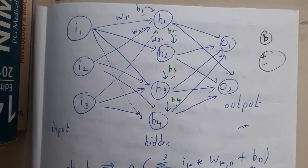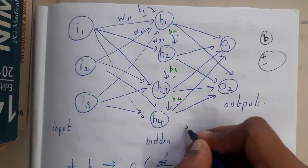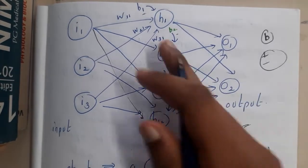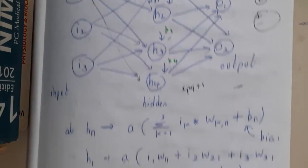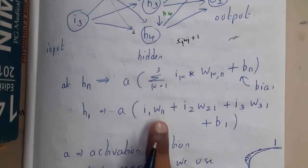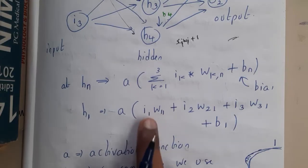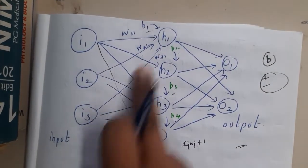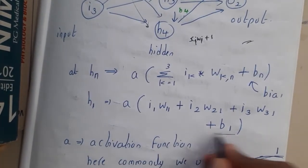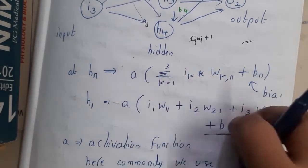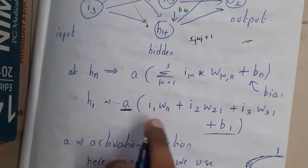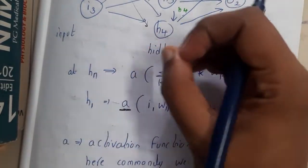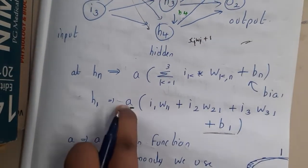At that time, the formula looked like x1*w1 + x2*w2 + x3*w3. Now with bias, the formula will look like i1*w11 + i2*w21 + i3*w31 + b. All these values you will be passing to the activation function. Based on that value, we are writing the activation function. If the value is greater than 1 it will be 1, if it is less than 1 it will be 0.